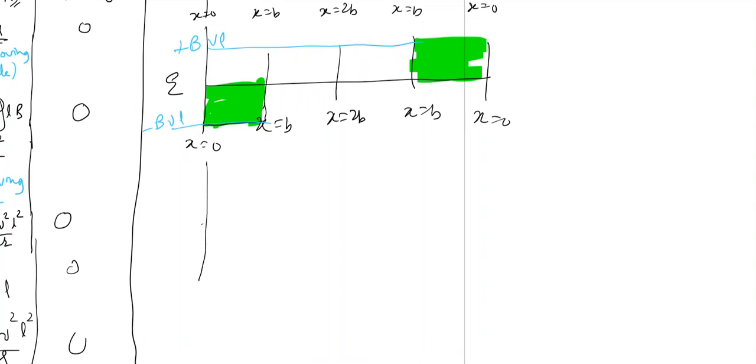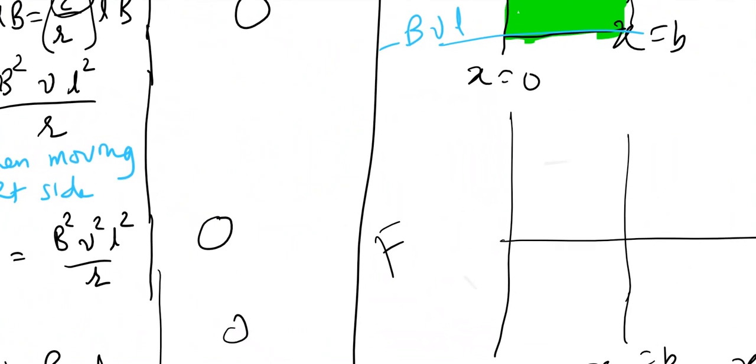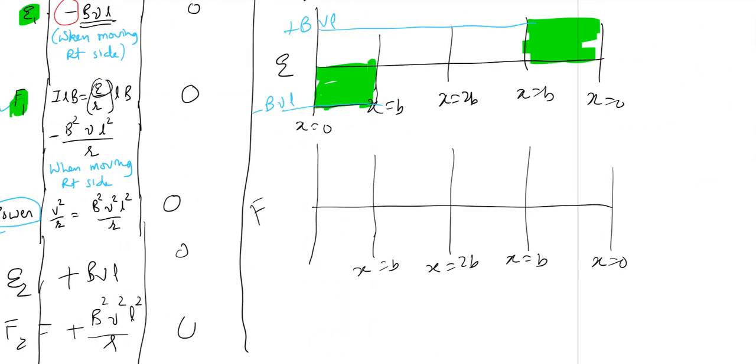And that is true with force also. If you plot graph of force versus x, how much is the force? Force is b²·v²·l² by r, negative earlier but constant. So you may say this is the force. This is the force. Value is b²·v²·l² by r.